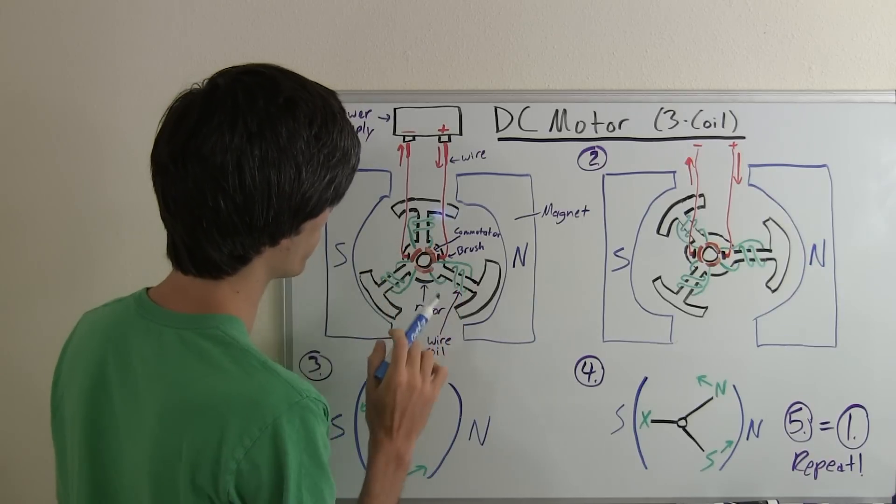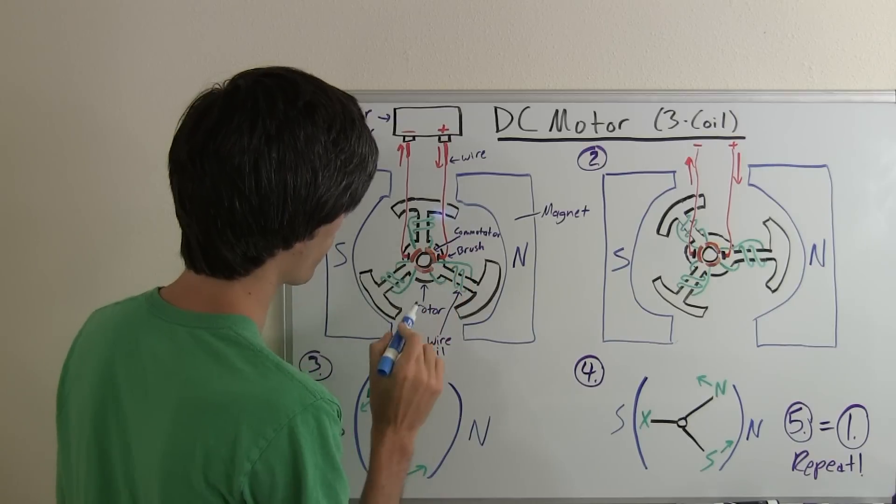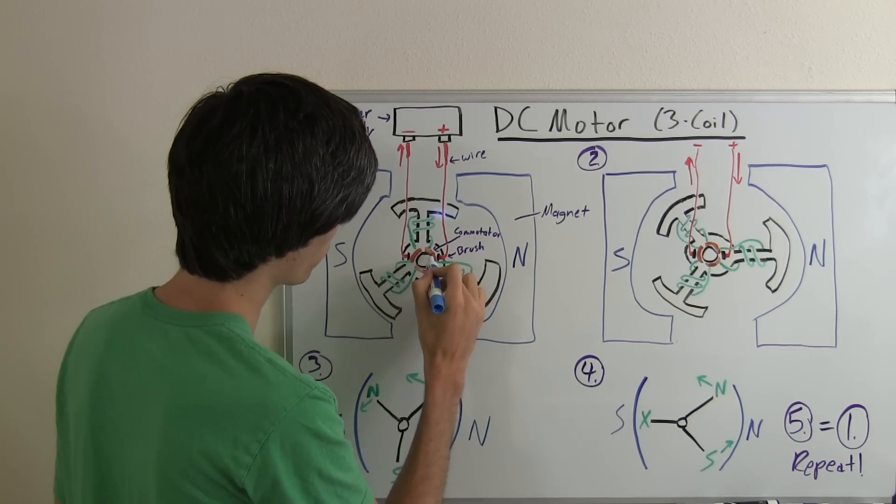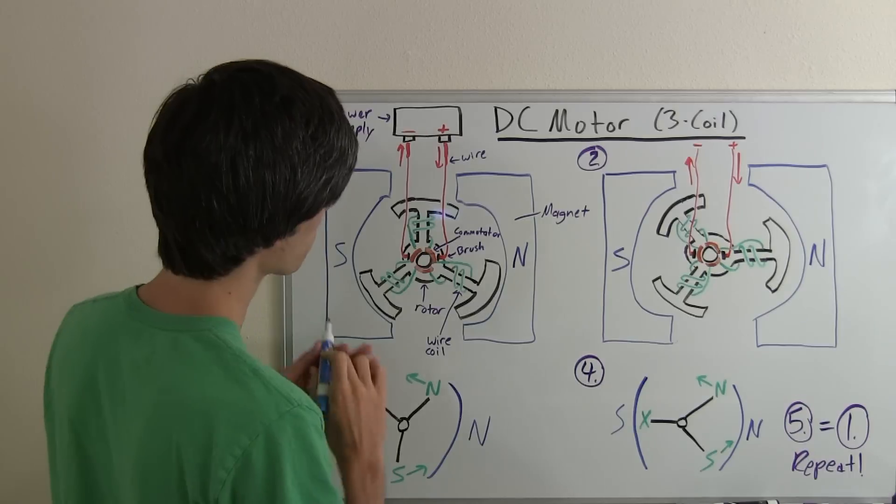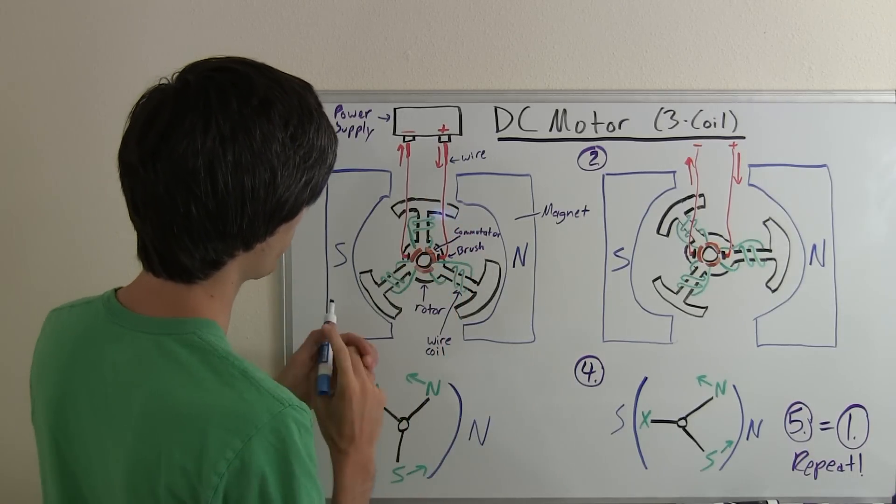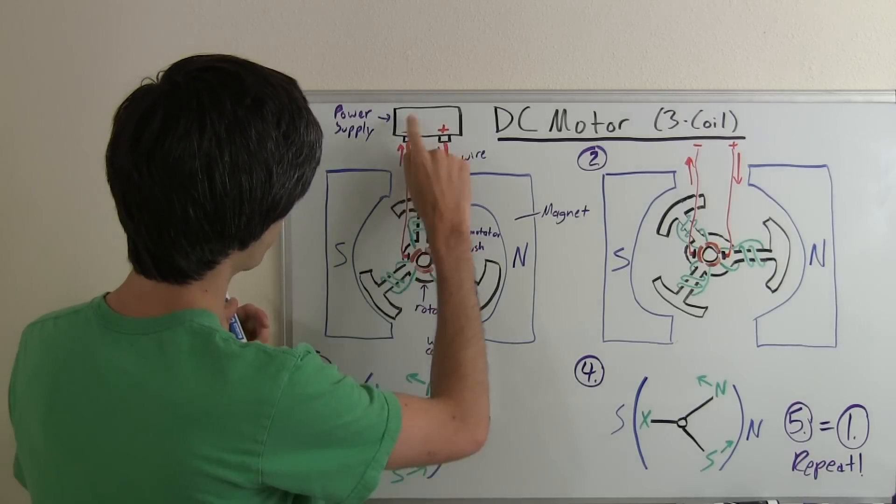The coil, the wire coil that's wrapped around the armature, is also connected to that commutator. So the current will flow through here, it'll go to the brush, cross over to the commutator and then into this coil, and then the current will go around that coil and back down to the next commutator and back to the power supply.